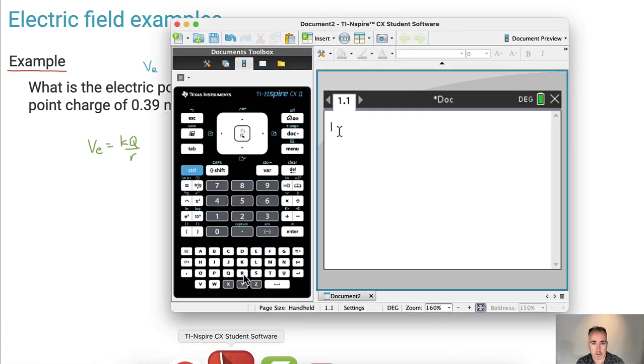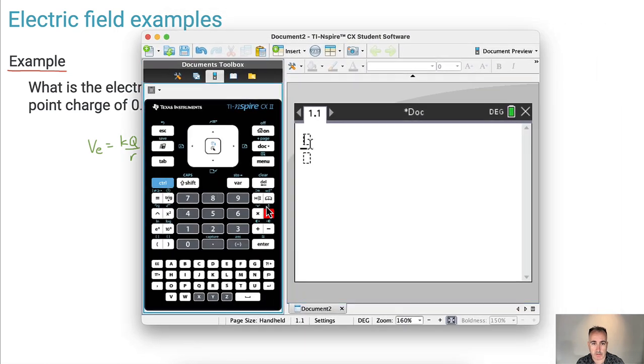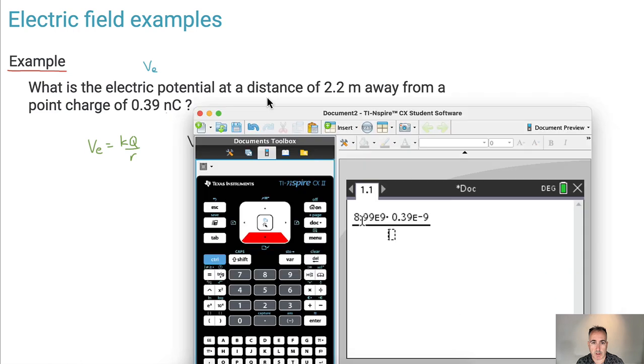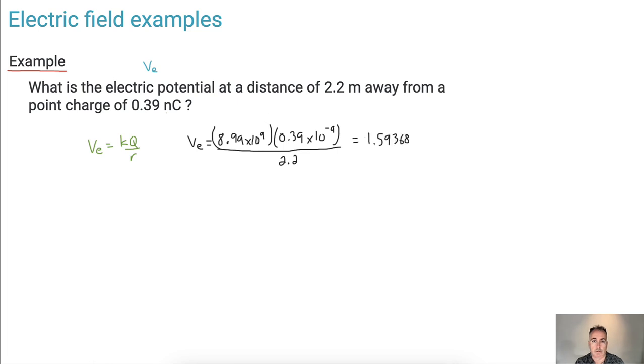So let's take a look on our trusty calculator here and put it all in. So I've got, I'll do a fraction first. 8.99 times 10 to the 9 times, what's Q again? Q is 0.39 times 10 to the minus 9. All that is divided by 2.2.